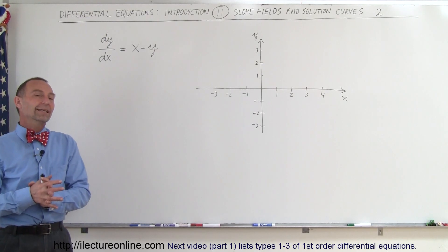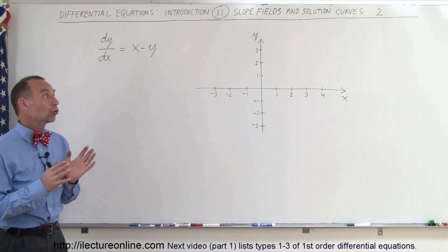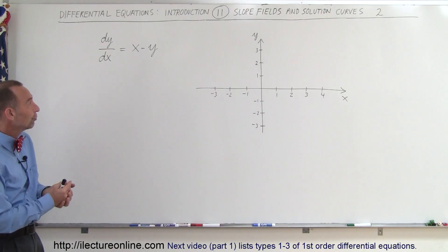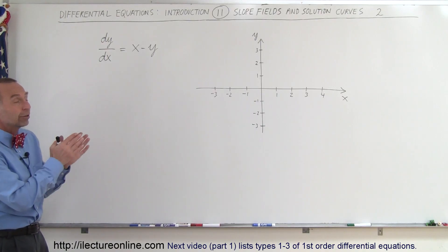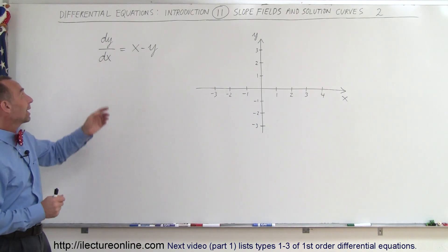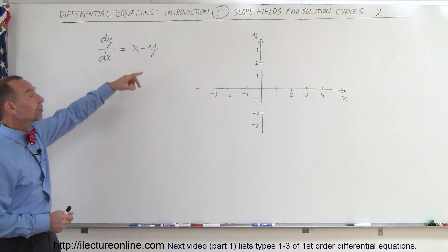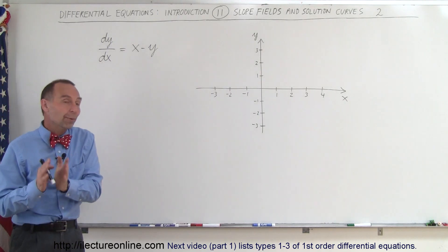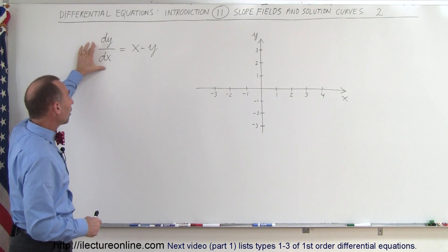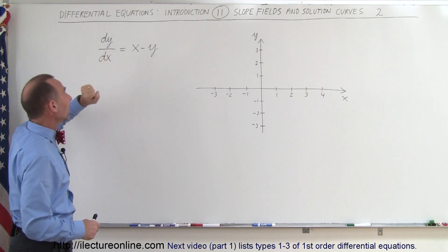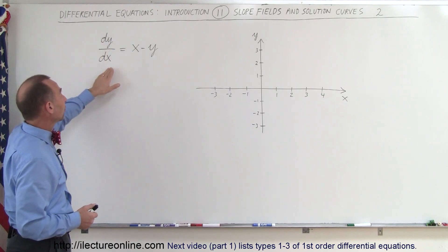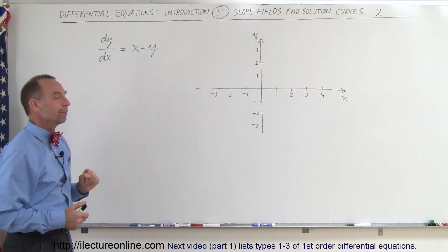Welcome to ElectronLine. Here we're going to show you how to find the solution curves by drawing the slope field, and this is a slightly more difficult problem. We have dy/dx equals x minus y. Remember dy/dx represents the slope of the function y, and the slope of the function y is equal to x minus y.